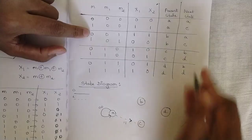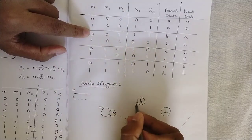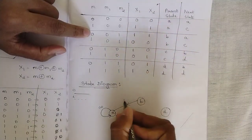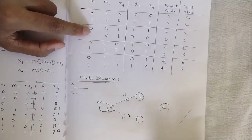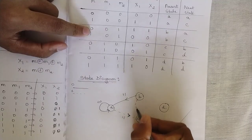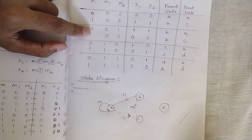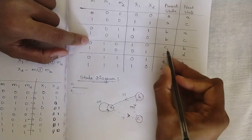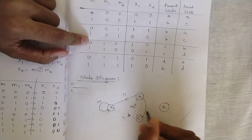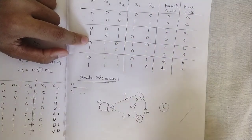When present state is B and input m=0, next state is A — draw a bold line from B to A with output 11. When input m=1, present state B goes to next state C — draw a dotted line from B to C with output 00. When present state is C and input m=0, next state is B — draw a bold line from C to B with output 10.